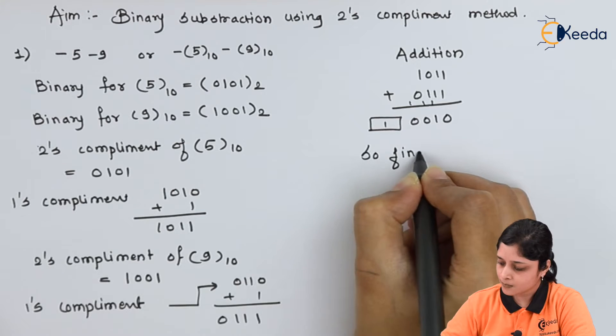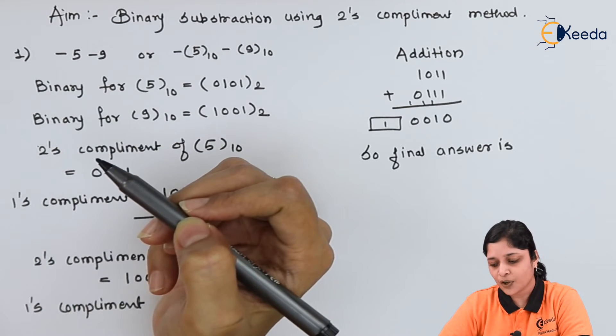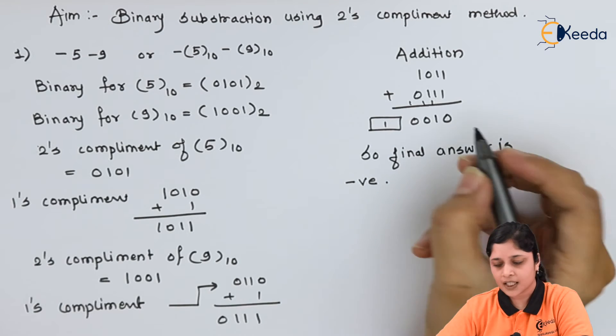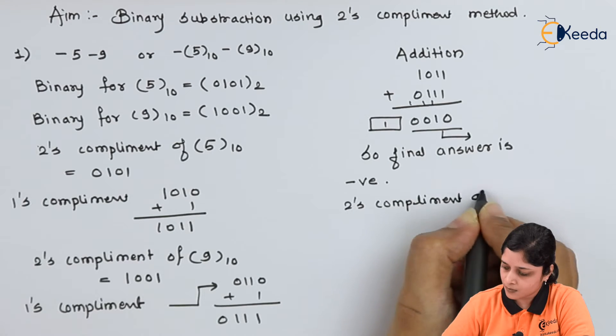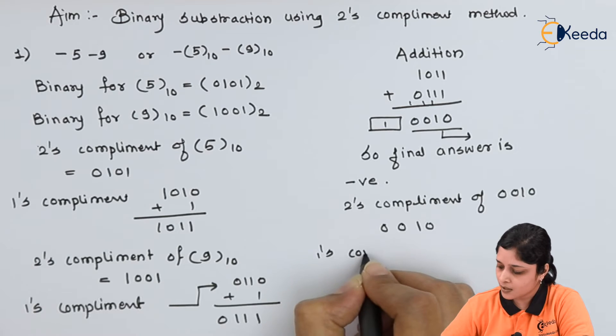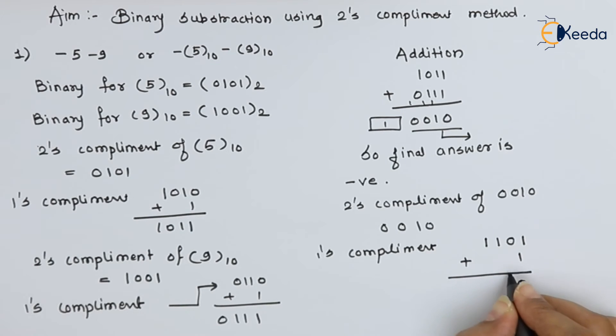Final answer is here. If you perform decimal subtraction, then -5 - 9 will give you -14. So final answer is negative. You have to neglect the carry and calculate the 2's complement of this number. 2's complement of 0010: write down 0010 as it is, calculate its 1's complement which gives 1101. For 2's complement you have to add 1. 1 plus 1 is 0, carry 1, giving 1110. Final answer you can write as negative.